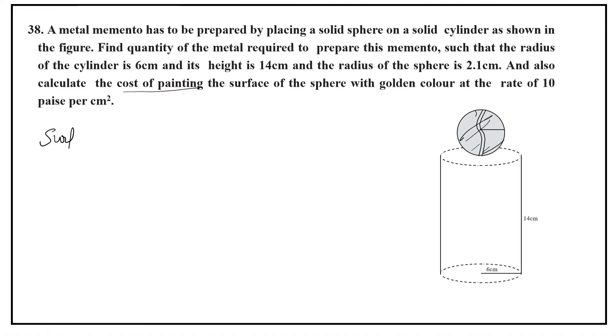For that, surface area of sphere we have to calculate. 4 pi r square. That is equal to 4 into pi, 2.1 into 2.1. 4, 22 by 7, 88 into 2.1.